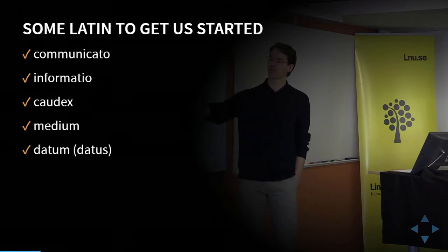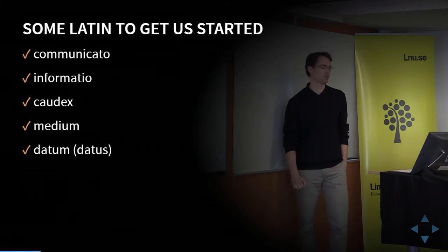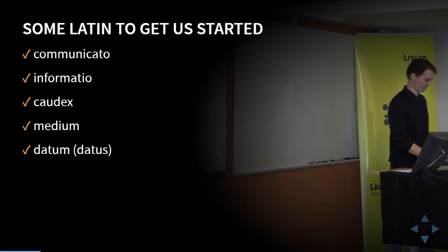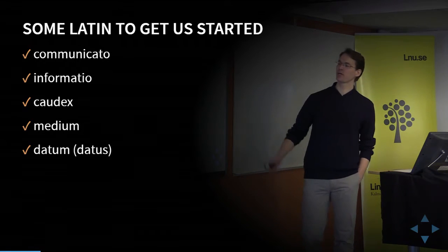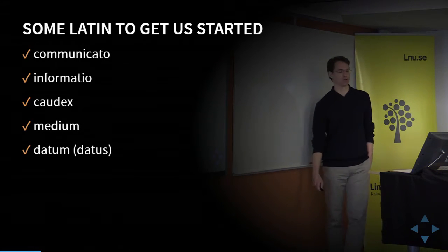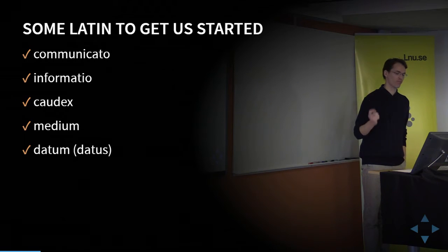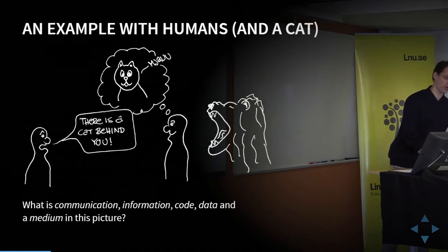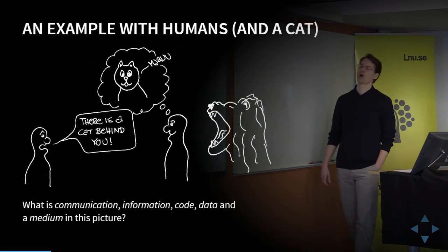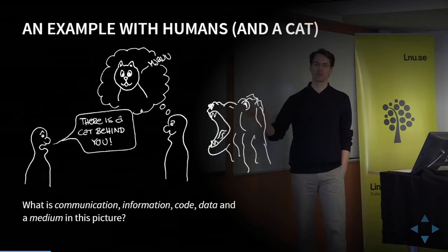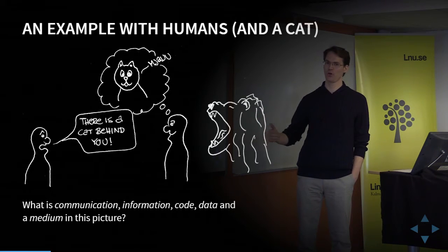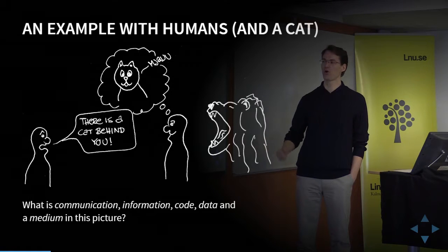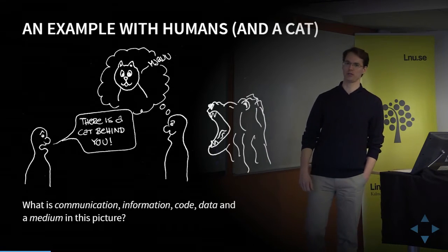Data is the last word — datum, that which is given. And then we have medium, that which is between. To see if you understood this, here we have a picture. I want you to take a look at this picture and try to figure out what is communication, what is the information, what is the code, what is the data, and what is the medium in this picture.